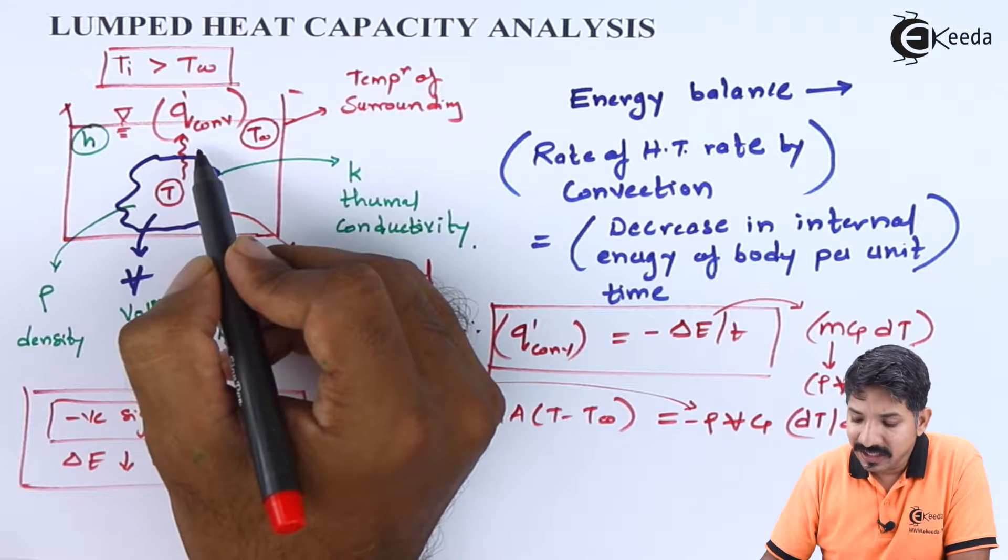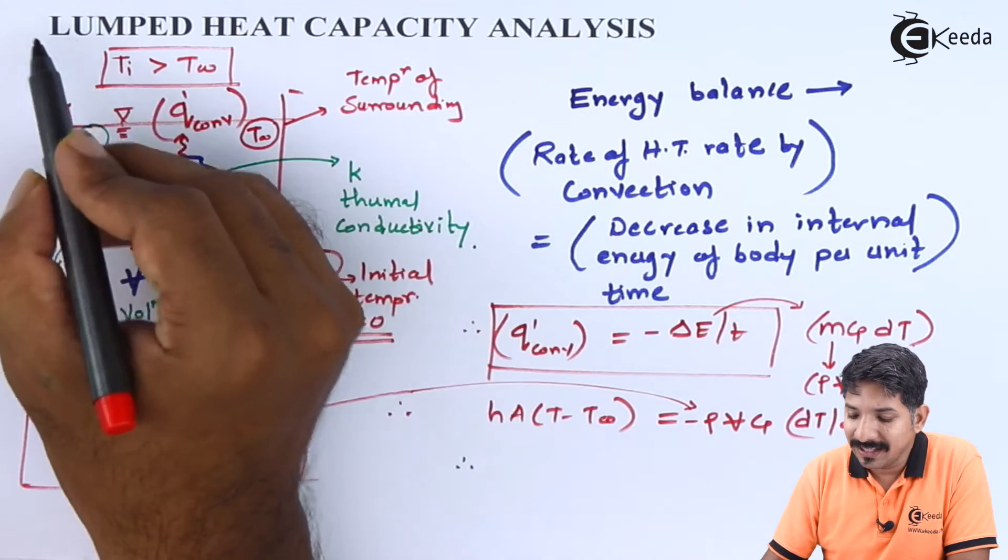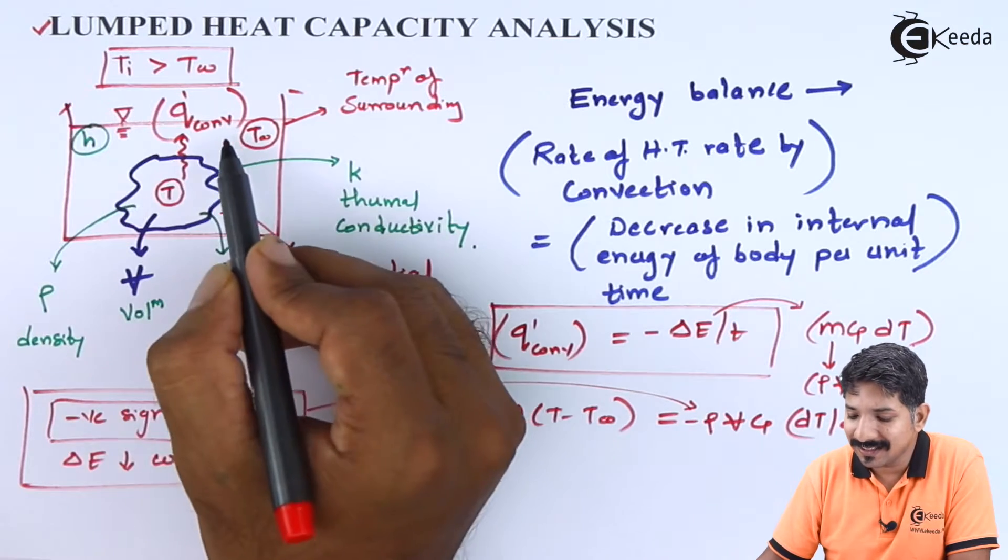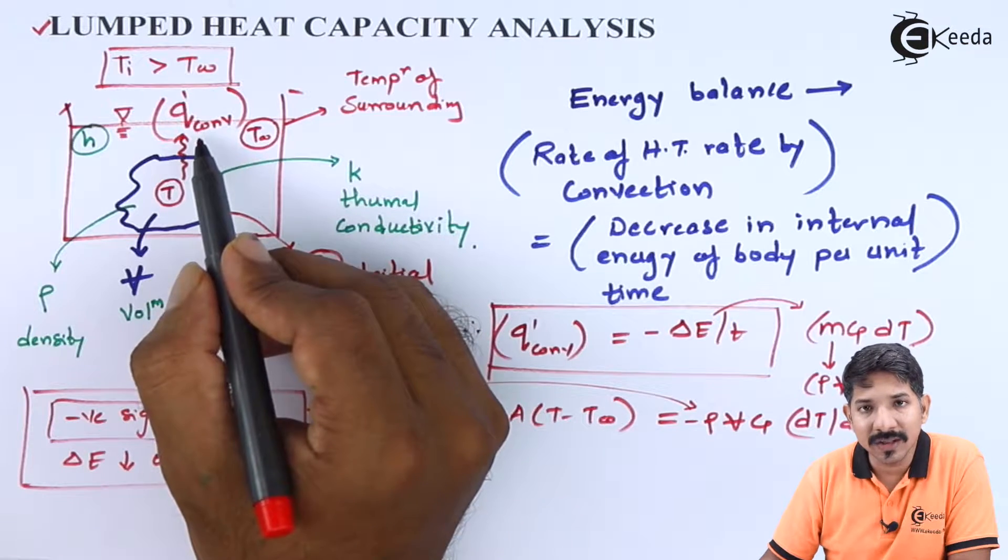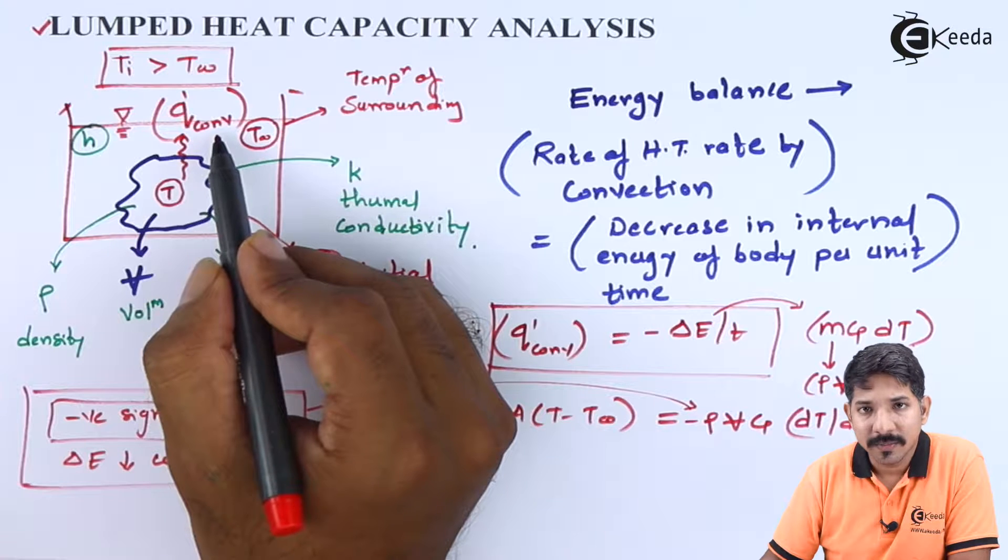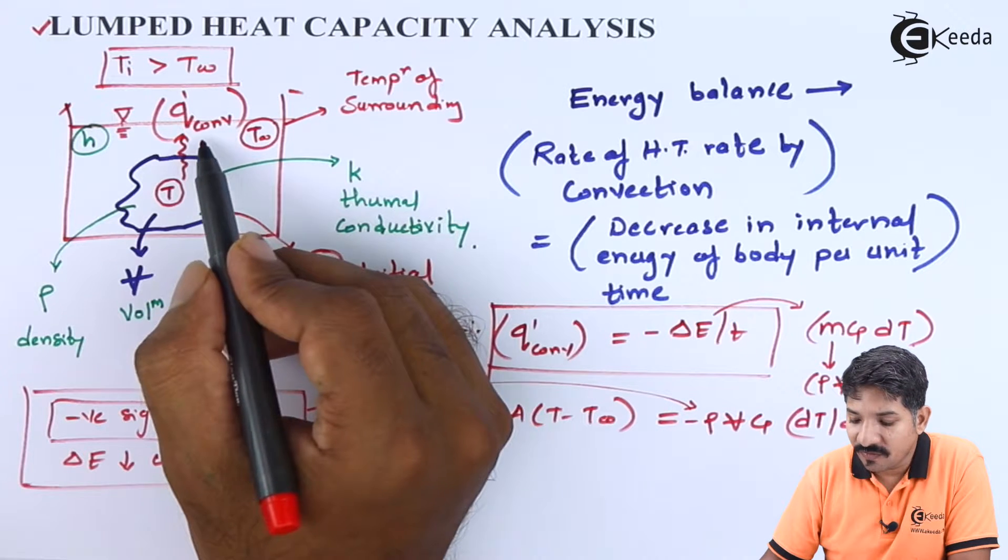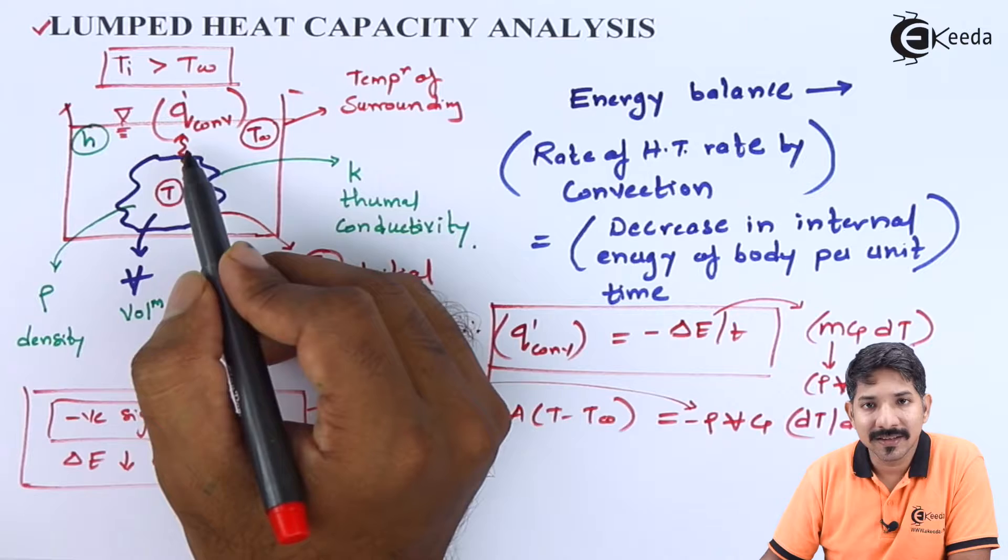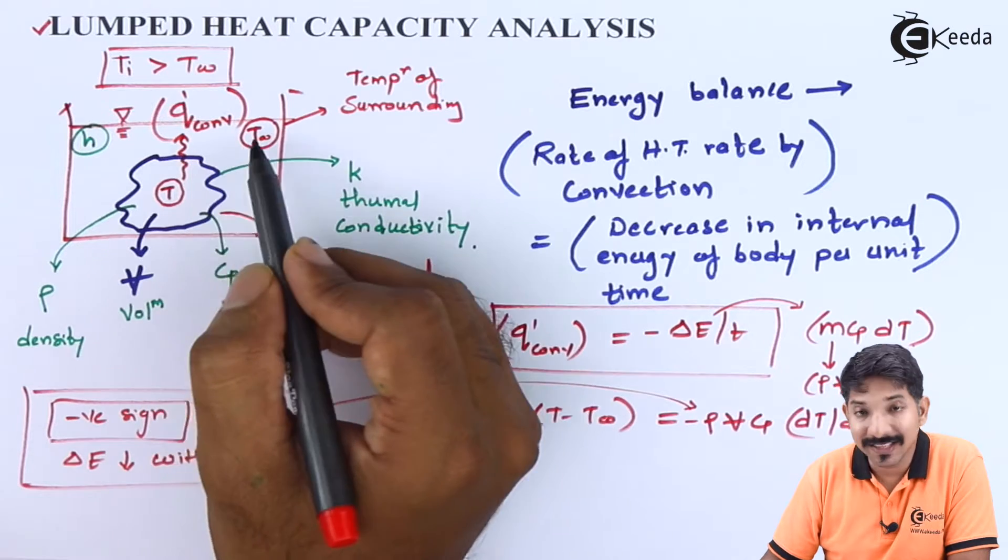Now this heat, as we have seen previously, in case of lumped heat capacity analysis, the heat transfer rate is only by convection, because the thermal resistance offered by convection itself is valid. The thermal resistance offered by the conduction is negligible.